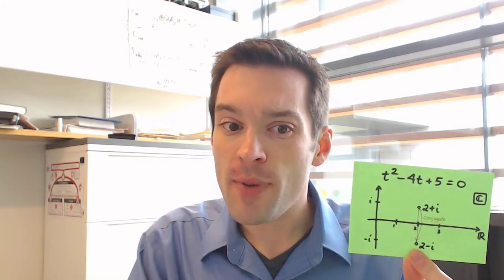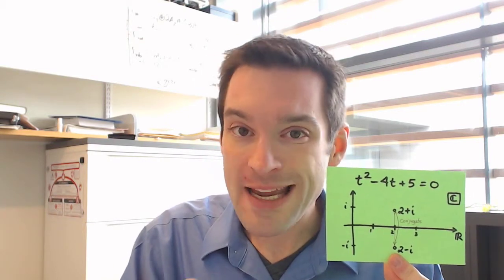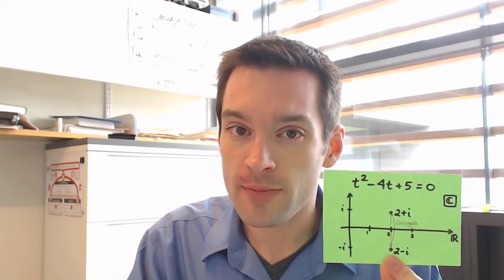You may already be familiar with the idea that when a polynomial has real coefficients, such as t squared minus 4t plus 5, its roots will have a relationship between them, necessarily.